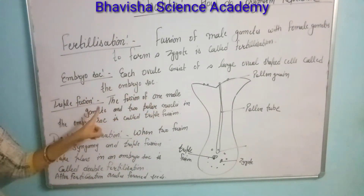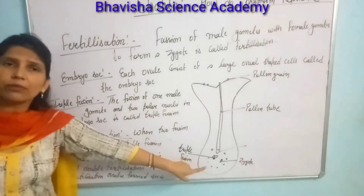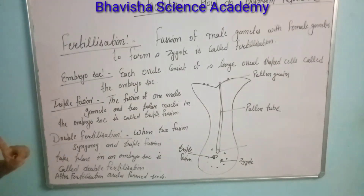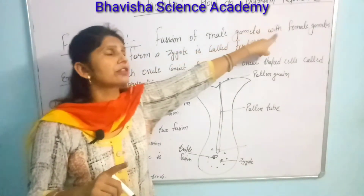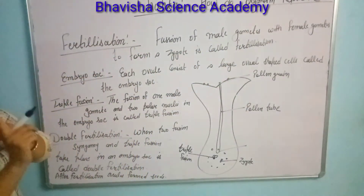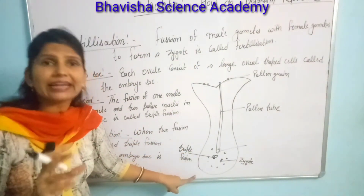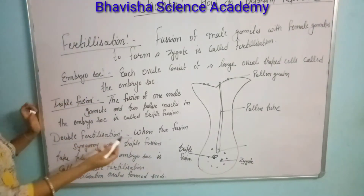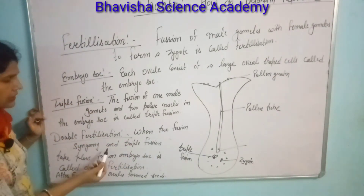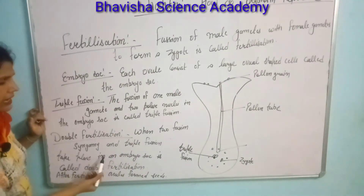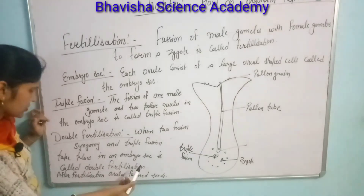Triple fusion is the fusion of one male gamete with two polar nuclei (two eggs). That is triple fusion. The zygote is formed by the fusion of the male gamete with the female gamete. When both — zygote formation and triple fusion — take place together in the embryo sac, it is called double fertilization.